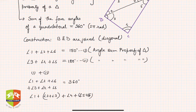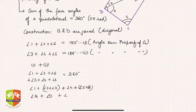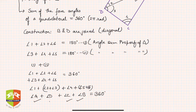Looking back at the figure, angle 2 plus angle 3 is angle D, and angle 5 plus angle 6 is angle B. So angle 1 is angle A, angle 2 plus 3 is angle D, angle 4 is angle C, and angle 5 plus 6 is angle B — and all of this equals 360 degrees.